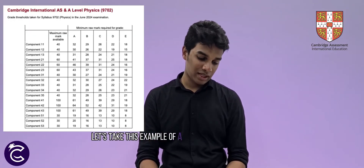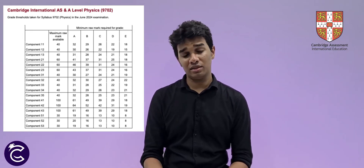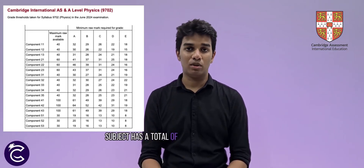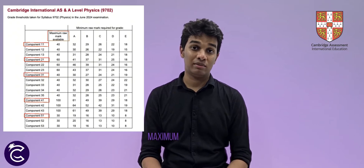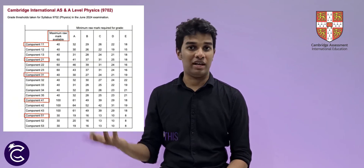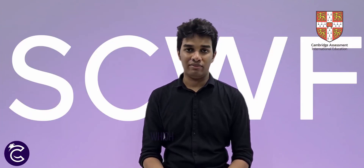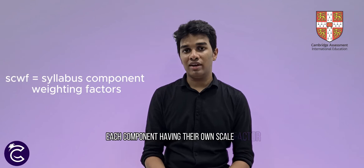Let's take the example of A-level physics from Cambridge. As you can see on the screen, that subject has a total of 5 different components, each component with their own distinct maximum raw marks. You give your exam and obtain these marks — but are these your final marks? Not really. Cambridge has a particular system of component weighting factors, where each component has its own scale factor by which the raw marks get multiplied. Cambridge does this so as to give varying levels of importance to different components.